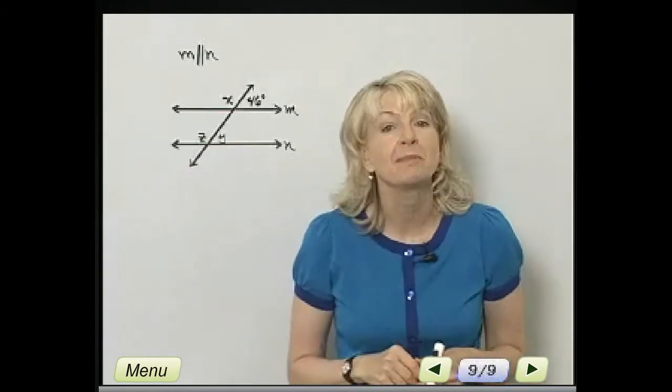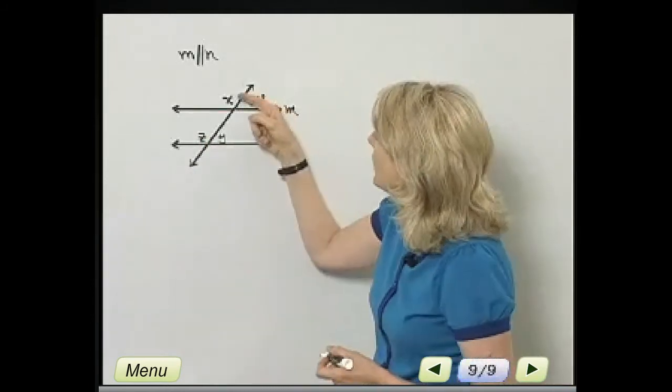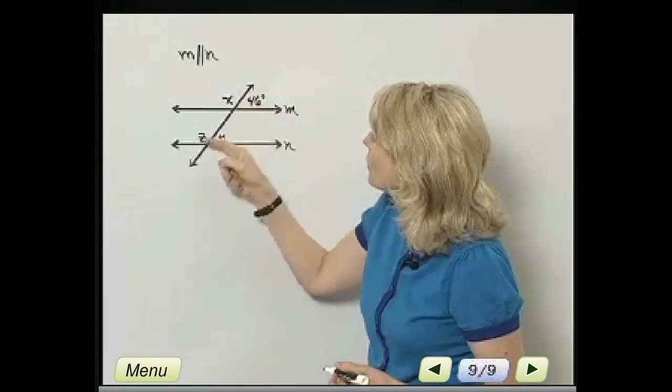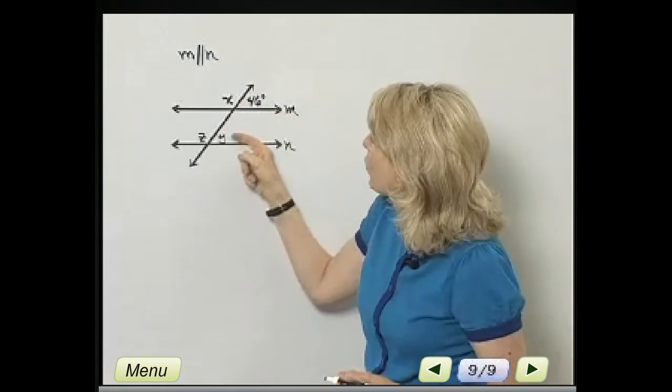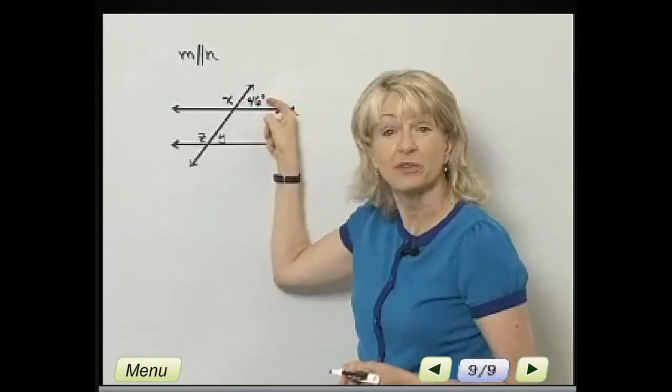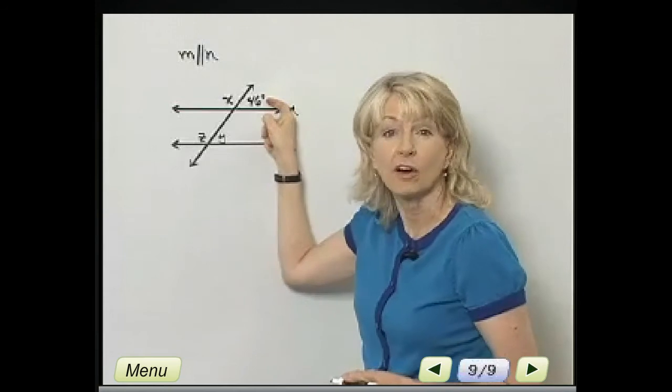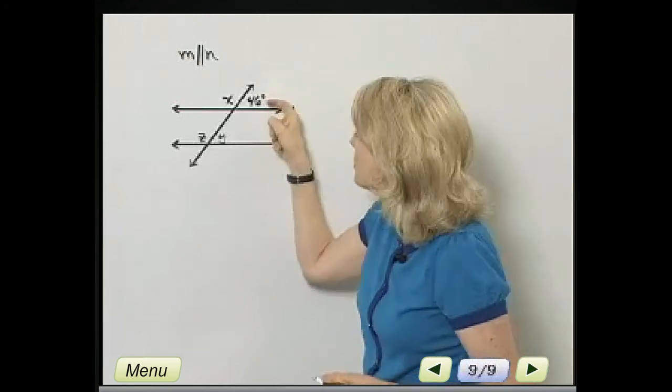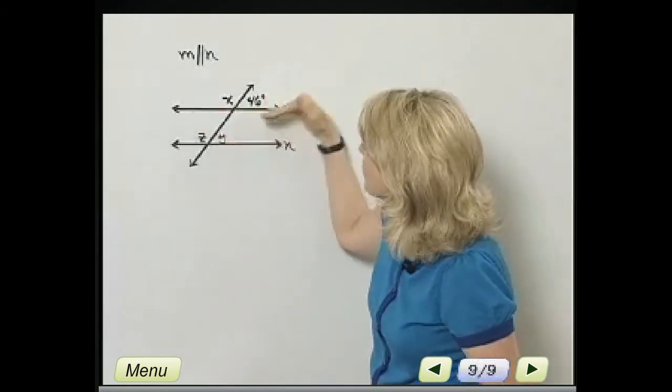First, what do we mean by corresponding angles? Well, X and Z are corresponding angles. And Y and this angle measuring 46 degrees, those are corresponding angles. They're basically in the same place with each parallel line.